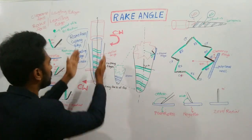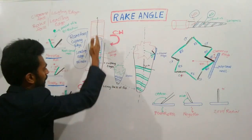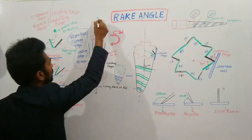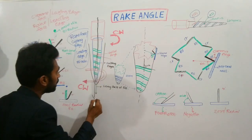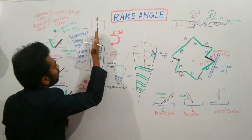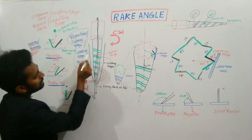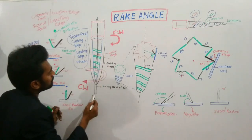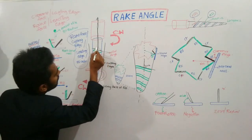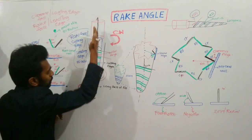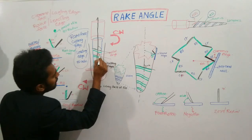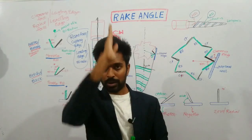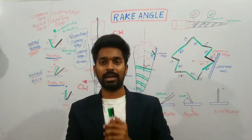If you observe this diagram, this is the root canal where a rotary file is inserted. The rotary file is rotating in a clockwise direction. This will become your long axis of the file. The green color parts are your cutting edges. The angle formed between the long axis of the file and the cutting edge — this angle is called the helical angle.